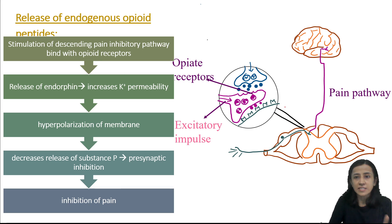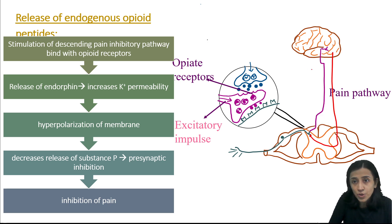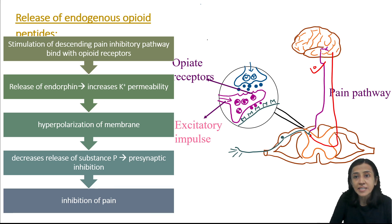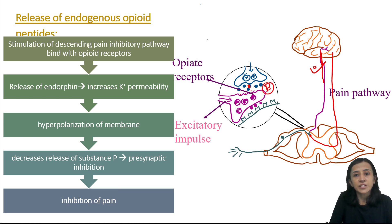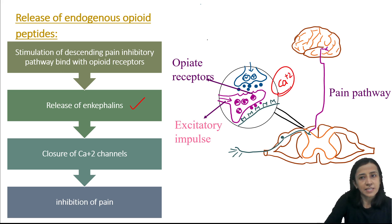When the descending pain inhibitory pathway is stimulated, there is release of endorphin. Endorphin is an opioid peptide that binds with opioid receptors and increases potassium permeability, causing hyperpolarization and decreased neurotransmitter release. When enkephalin is released, it causes closure of calcium channels — again presynaptic inhibition. There are three sites where opioids act: at the site of injury, at the dorsal horn, and in the brainstem including the raphe magnus nucleus.